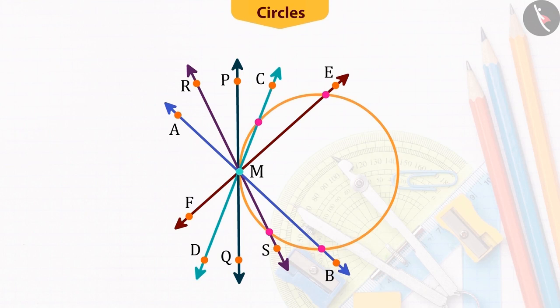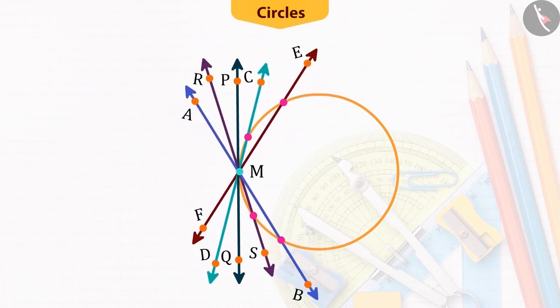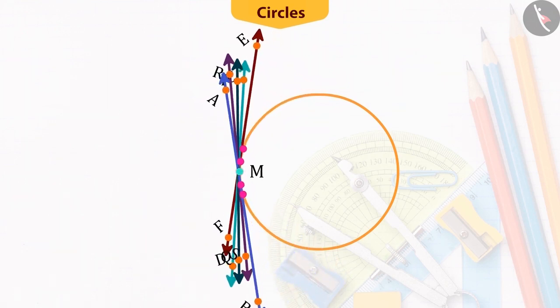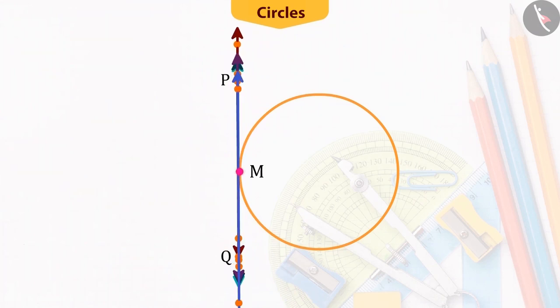Also, if you look here, you can observe that on bringing all other lines except PQ to the position of PQ, the common point of the respective line and the circle gradually comes closer to the common point M and ultimately coincides with the point M.